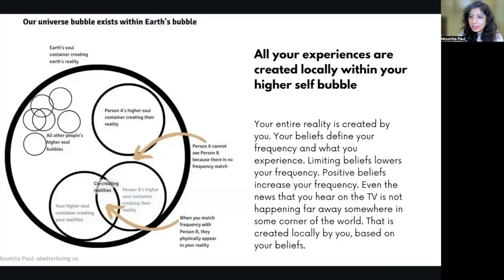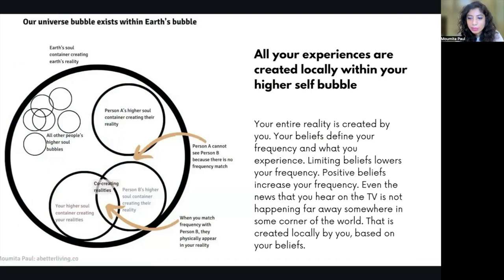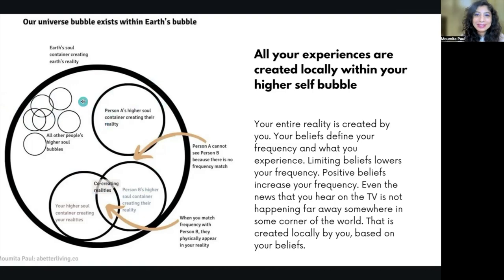We are housed inside the Earth's higher self bubble. All the human higher self bubbles are within the Earth's higher self bubble. The Earth's higher self bubble is within the Sun's higher self bubble, and the Sun's higher self bubble is within the solar system's higher self bubble. In other words, you are a cell in the universe's body — or God's body, if you want to call the universe God. It is like microcosm and macrocosm explained. You are cells in Earth's body. Earth is a cell in the Sun's body. Sun is a cell in the solar system's body. The solar system is a cell in the galaxy's body.